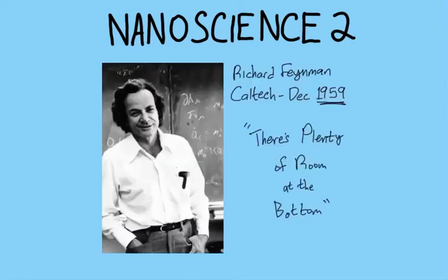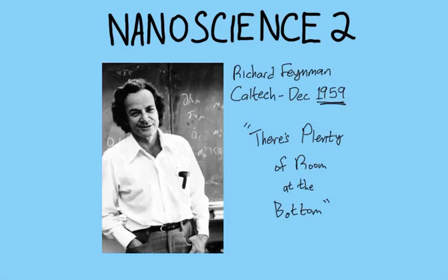Let's start in 1959 with Richard Feynman. You really can't start the history of nanoscience without this guy. He gave this speech called 'There's Plenty of Room at the Bottom' at Caltech in December 1959, and it basically set off a lot of goals and challenges for miniaturizing things. He basically said, hey, nothing in the laws of physics says that we can't make things a lot smaller — why aren't we doing that? And he gave some challenges, and people eventually did that.